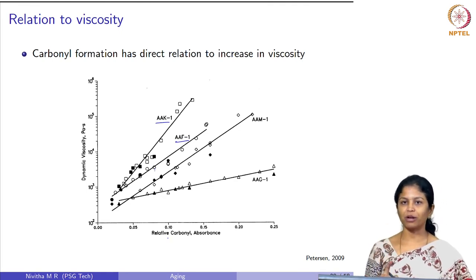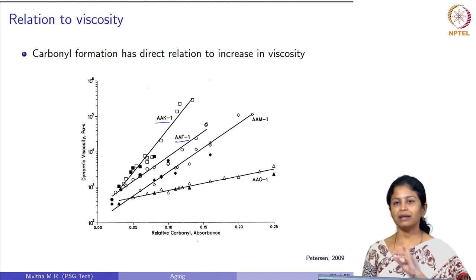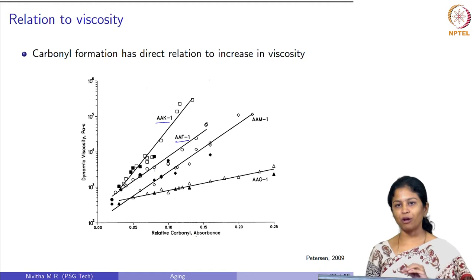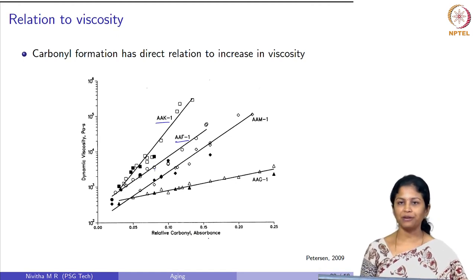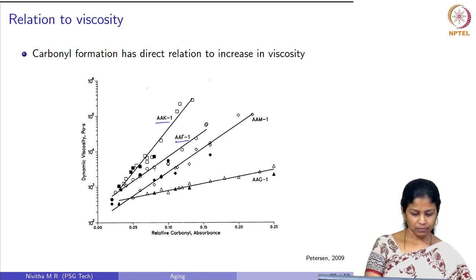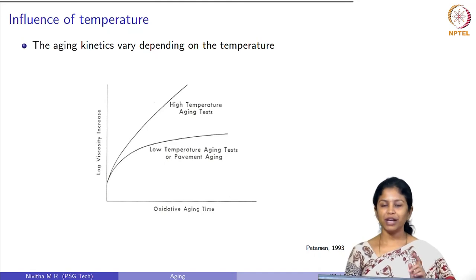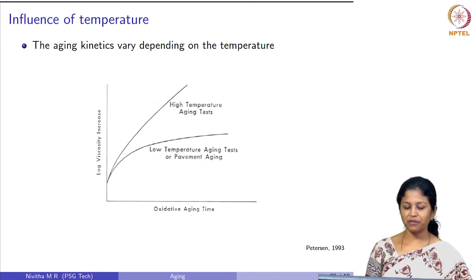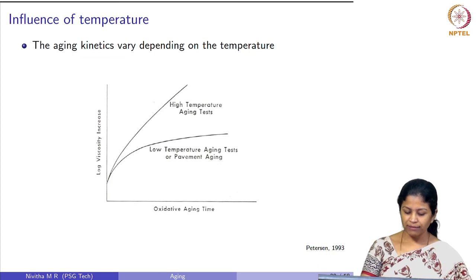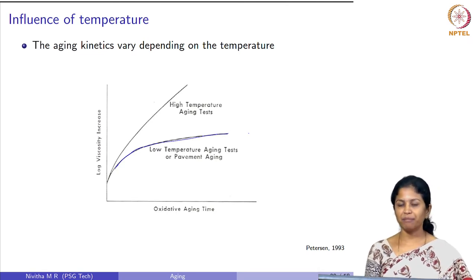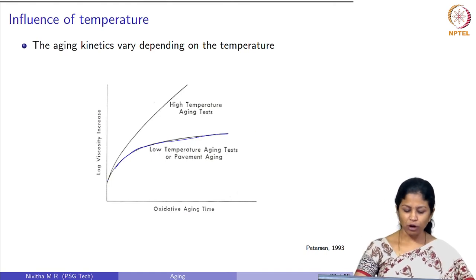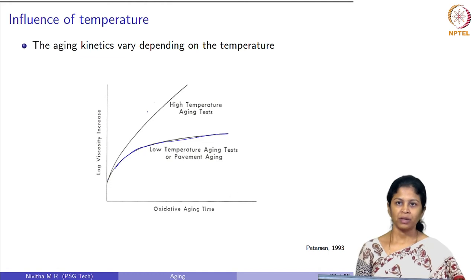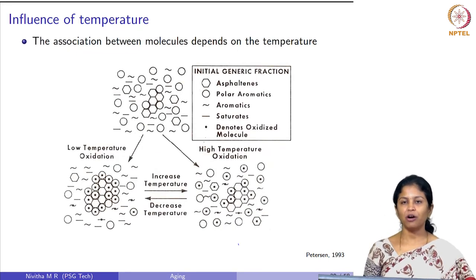Association is important, and there are also studies which could not obtain a positive correlation for some binder types. Next, we look at the influence of temperature on the kinetics of aging. A hypothetical figure shows that at low temperatures the viscosity increase is initially rapid and then slows down after a certain period, whereas at high temperatures the increase proceeds in a closer to linear fashion.